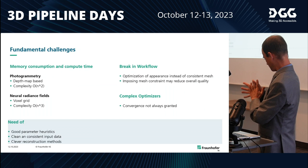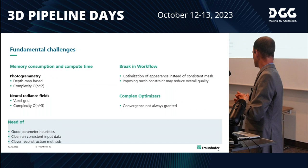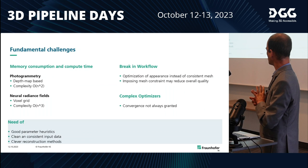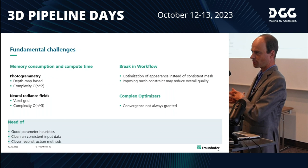What we need to do to solve this is to have good parameter heuristics for your algorithm to tune trade-offs. We also learned it's very important to have clean and consistent input data and accurate camera parameters, and then you need clever reconstruction methods to get a stable result. That's what we are working on — rebuilding our pipeline and trying to make it as robust as possible.